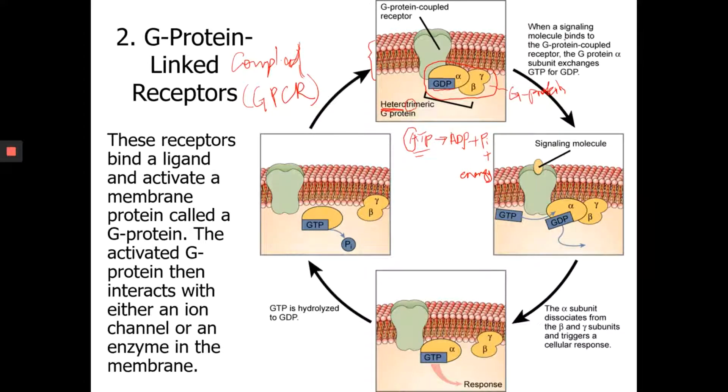Now, when a signaling molecule binds to the G-protein coupled receptor, if you have signaling molecule, again, you need to know this is going to be a water-soluble polar molecule. So it can only bind to a cell surface receptor. When it binds to this receptor, this is going to activate the G-protein.